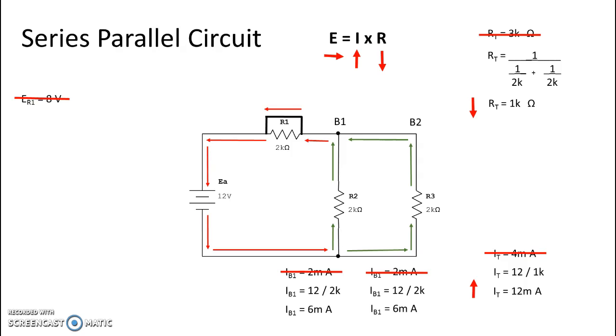...is going to change from 8 volts. It's now going to be 0 volts, because we take 0 ohms and multiply it by our total current, which is 12 milliamps, and get 0 volts. Anything multiplied by 0 will give me 0.